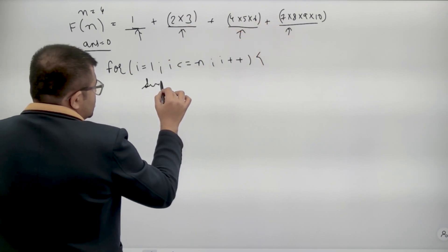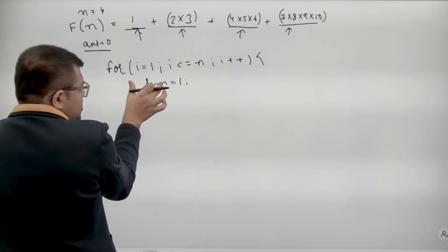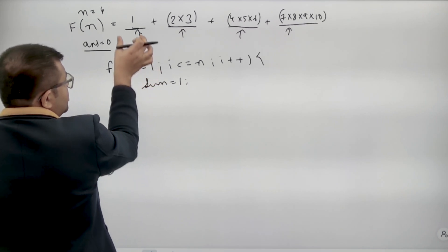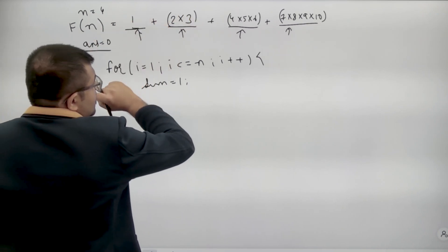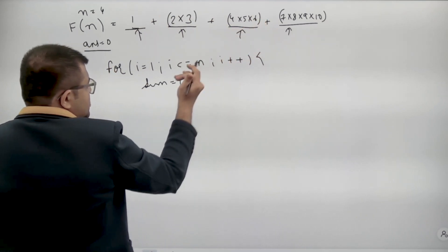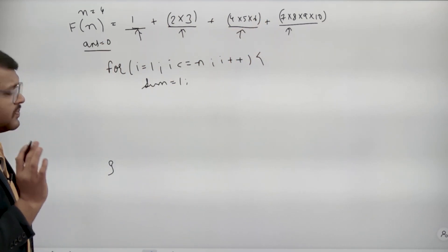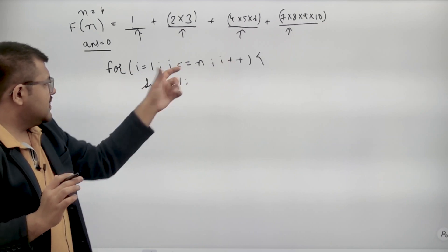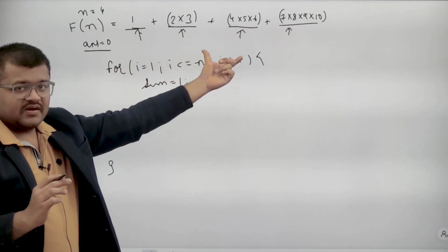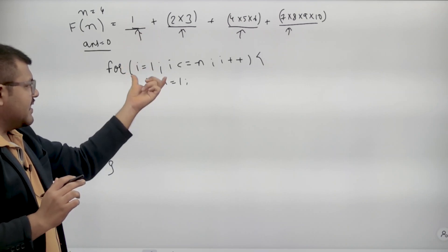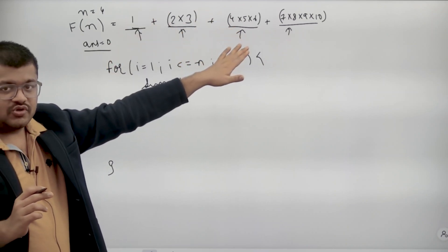So for i equals to 1, i is less than equal to n, i plus plus. In this I will calculate the ith term. Now the ith term has product of i number of elements. So I will say sum is equals to 1. So in sum I will store the ith element. So sum will contain first 1, then it will contain 2, 3, then it will contain 4, 5, 6. So I will calculate sum and keep adding it to my answer. This is the n terms inside. This is the sum of n terms for outer for loop. Inside I will calculate those n terms individually.